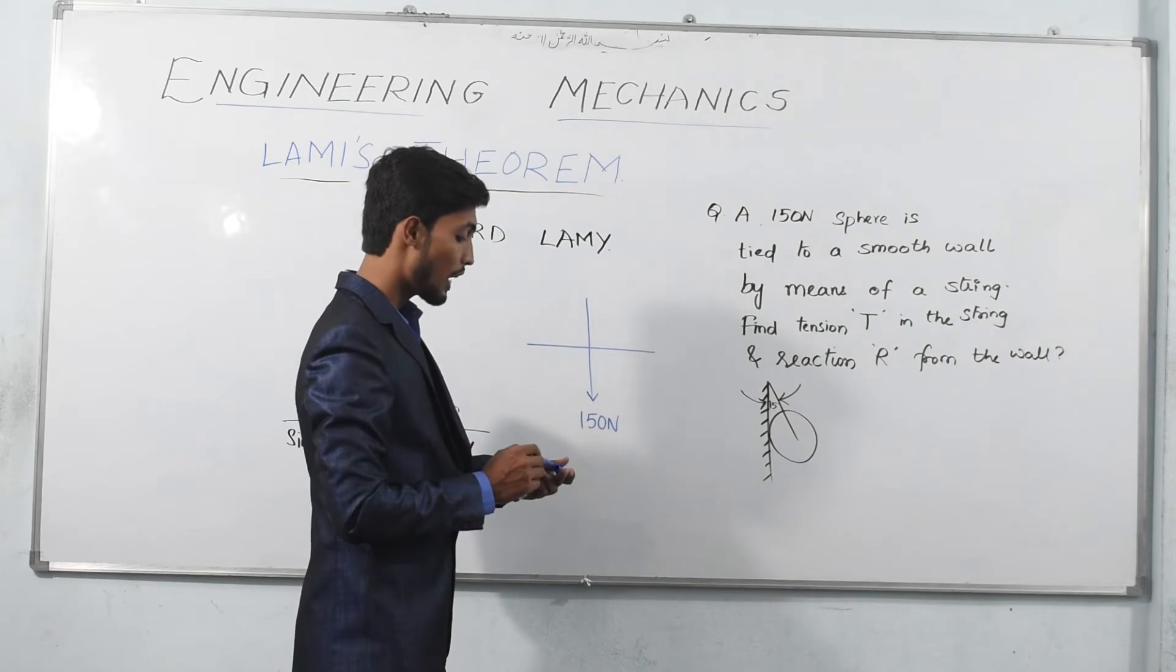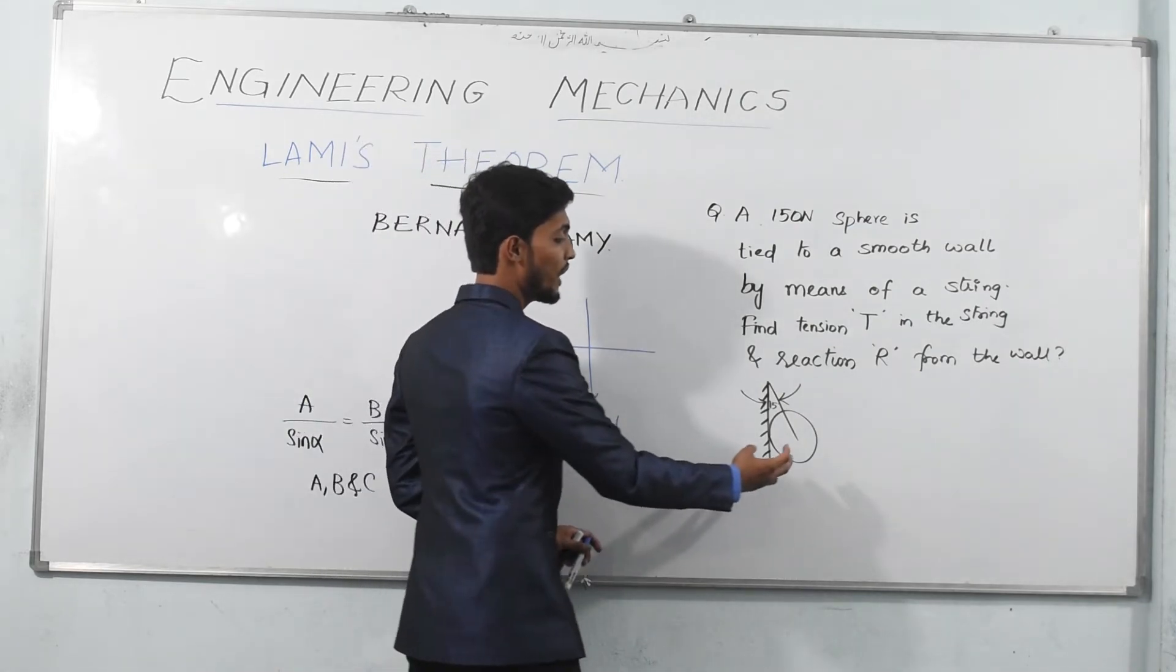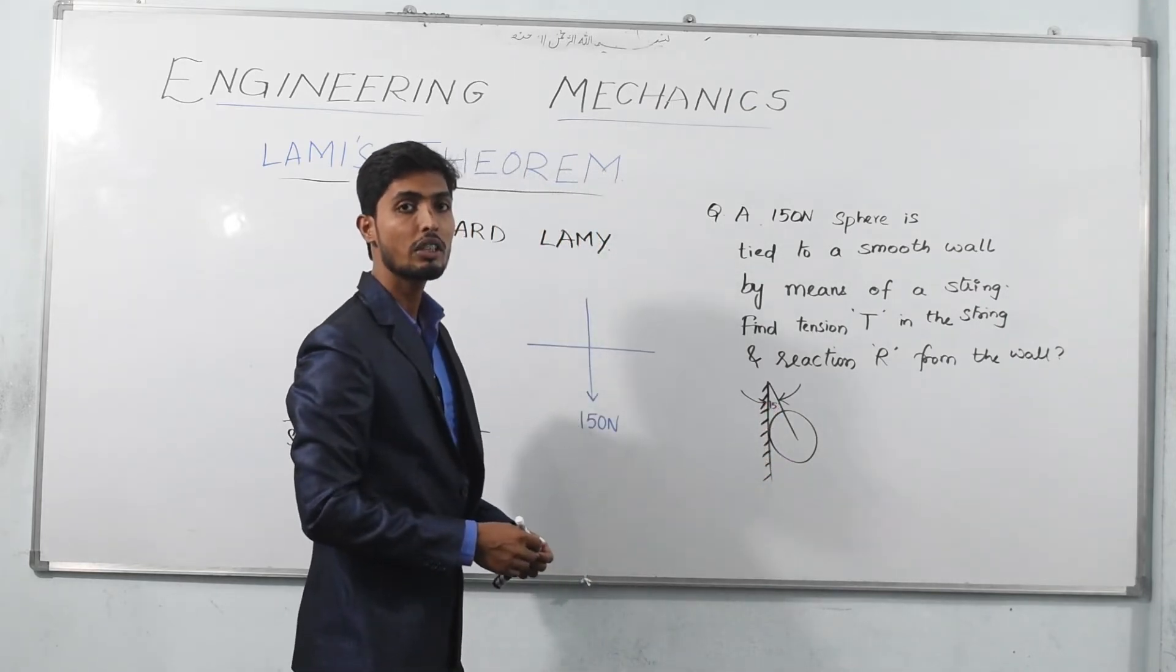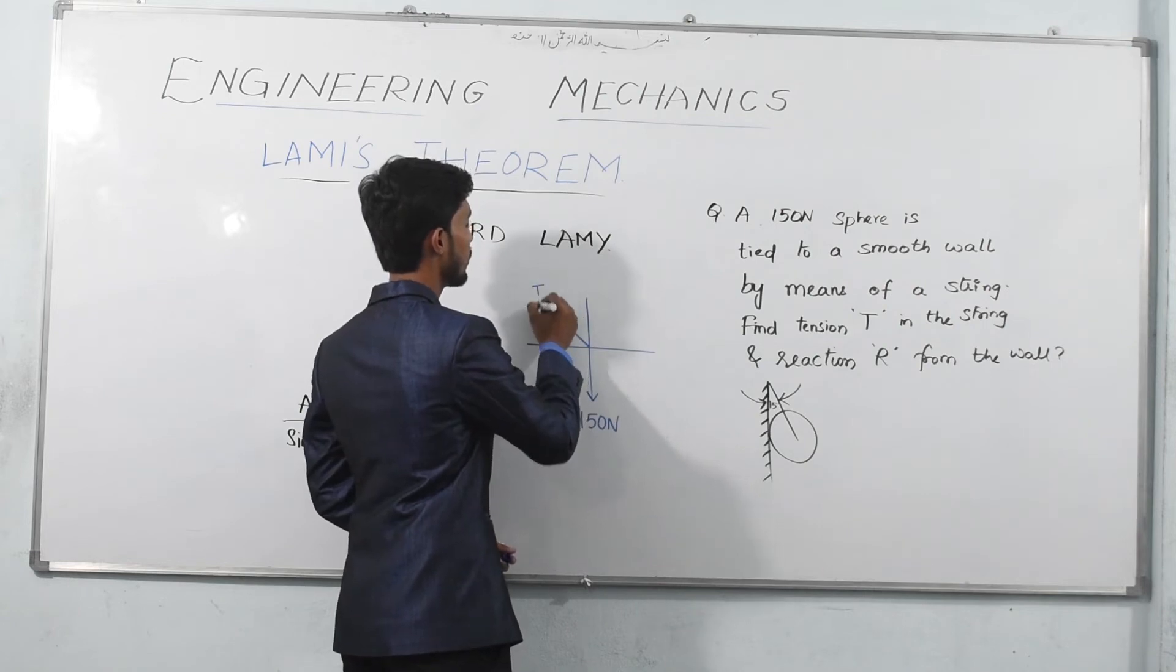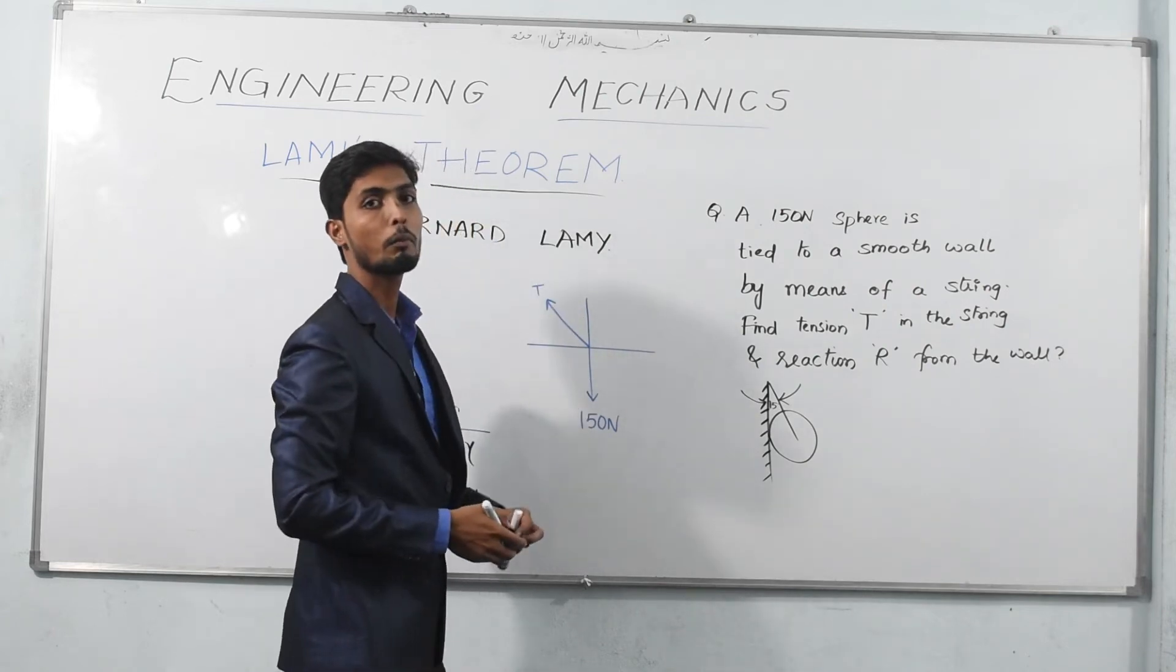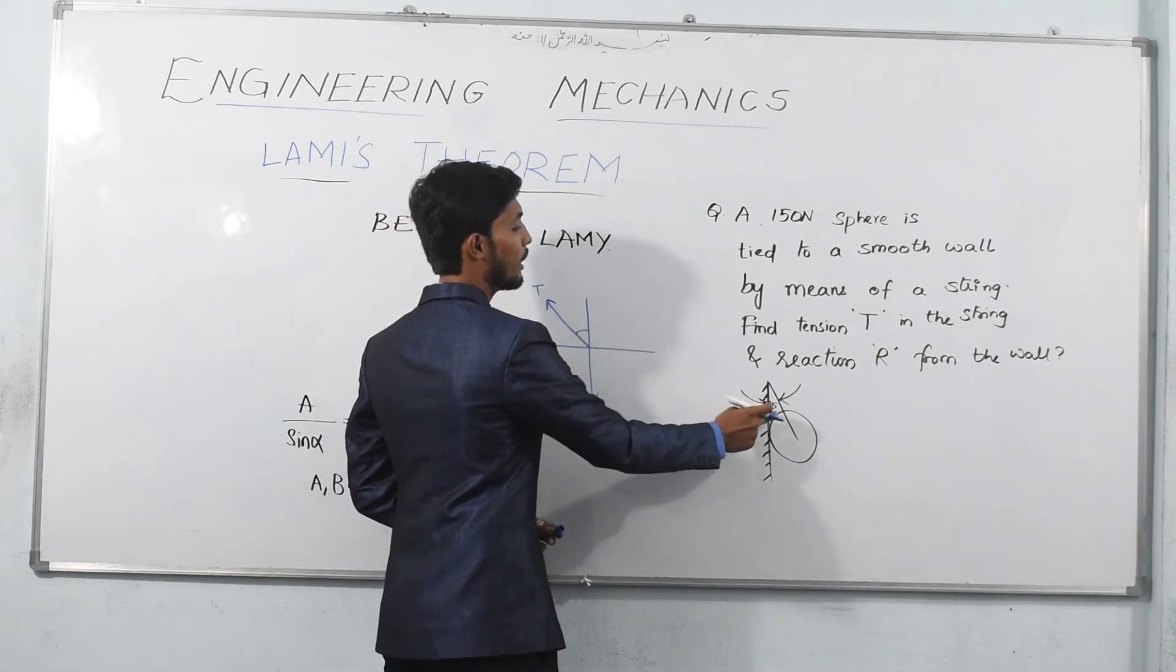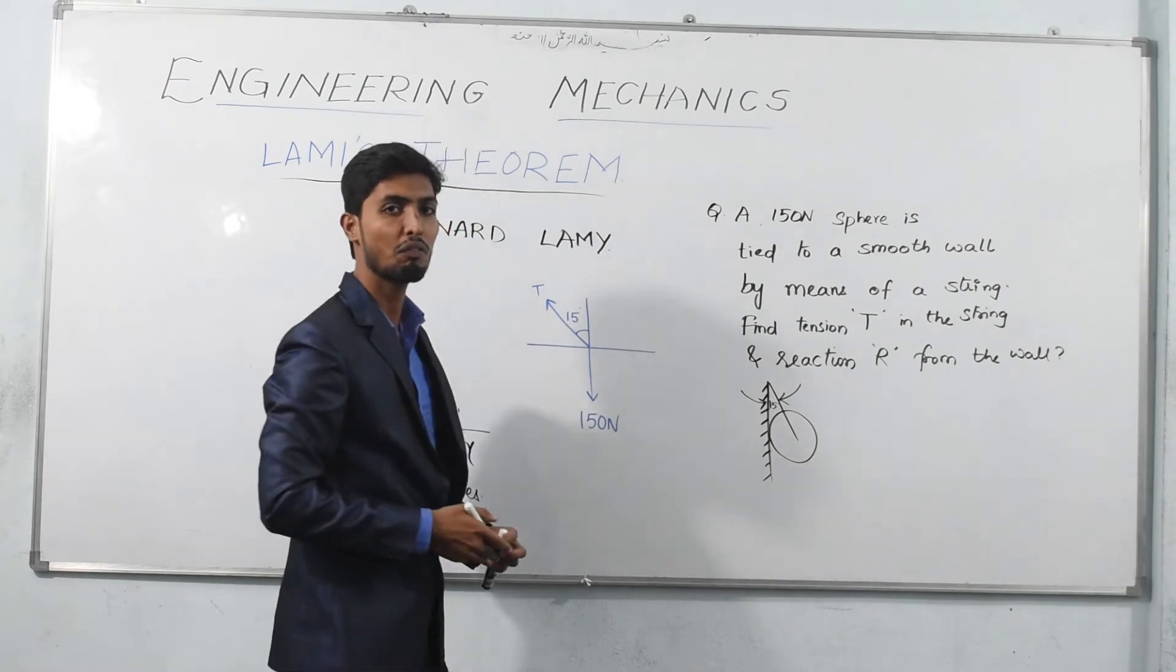Due to gravitational pull, weight is moving downwards, and due to the weight of sphere this string gets stretched. So in the subject mechanics, this stretching is known as tension, which is maximum at the end point. So with respect to vertical it is making 15 degrees, so the reference angle over here will also be 15 degrees.